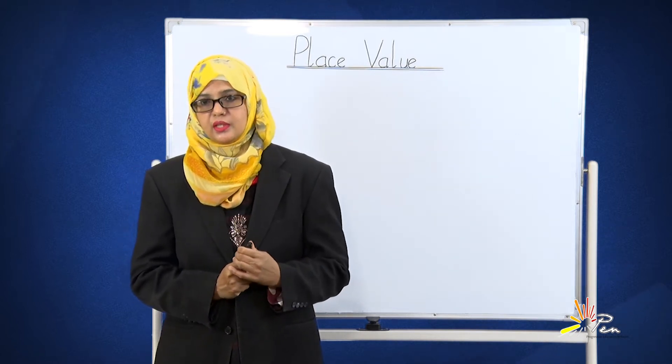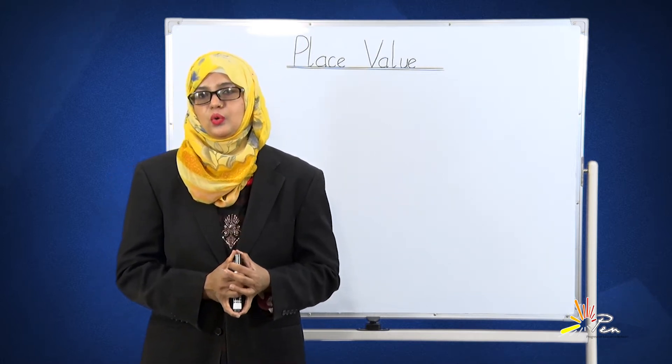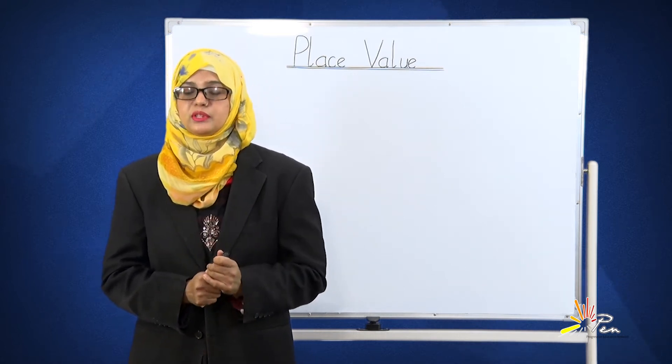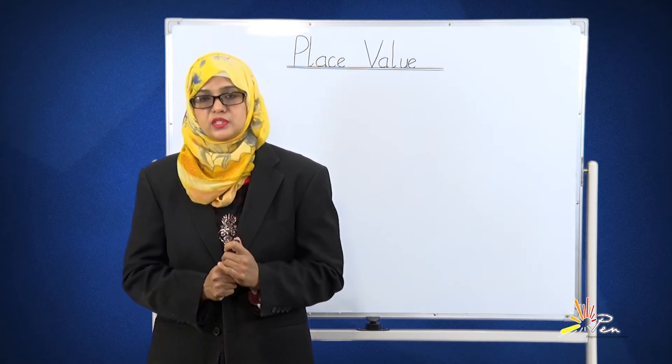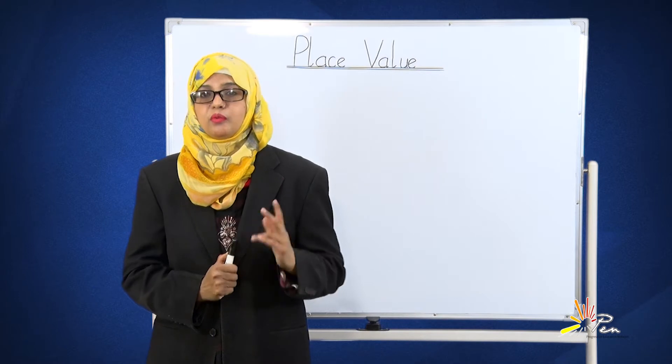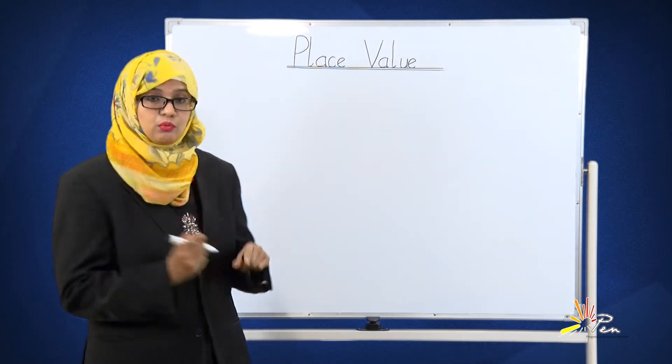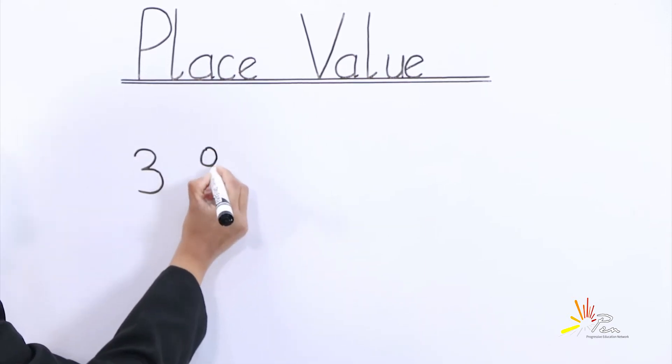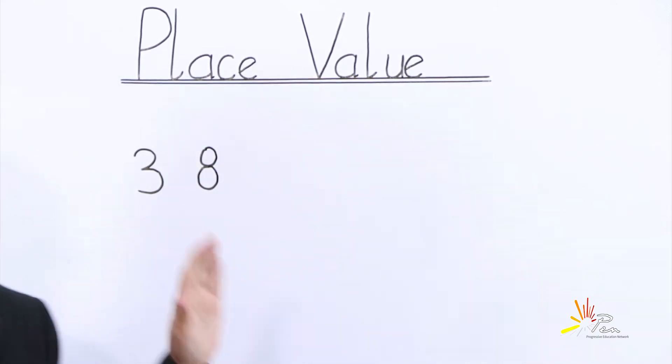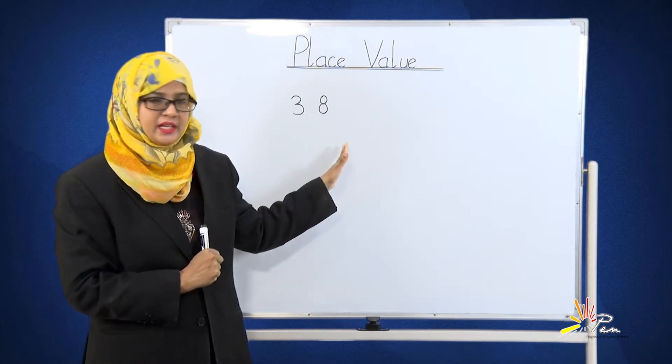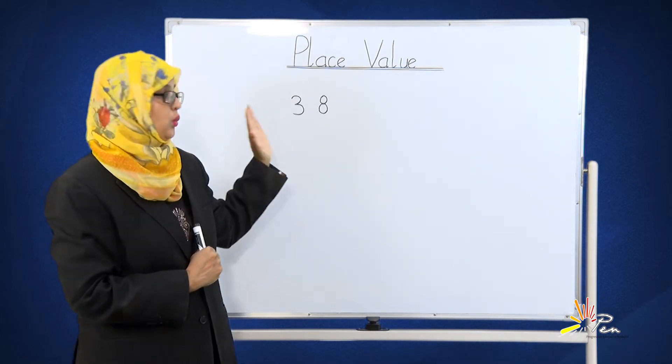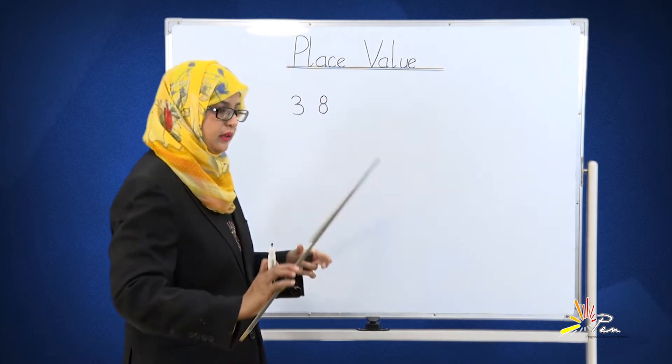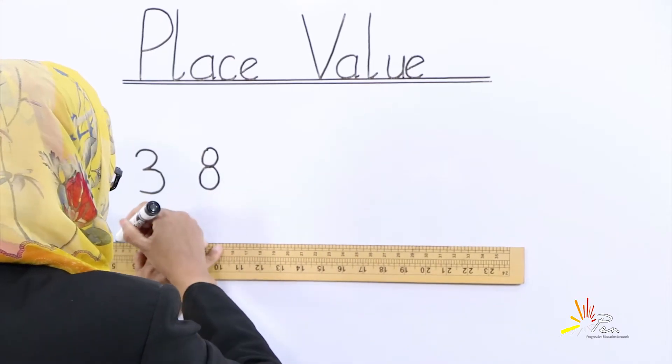Students, today we will talk about three-digit numbers, but for your convenience we will start from a two-digit number. Let's suppose we have a number here: 38. We don't know in this number what is the place value of 8 and what is the place value of 3. We can learn it through a table. It's a very simple method. I will draw a table here like this.